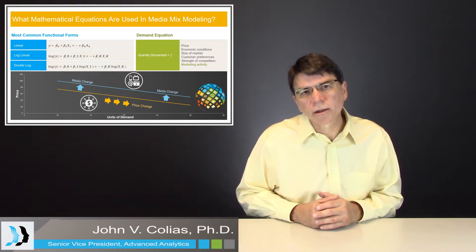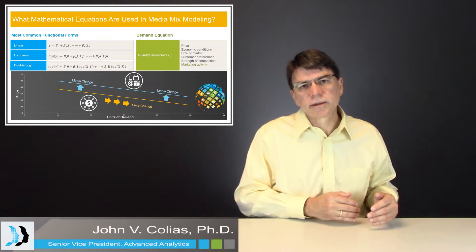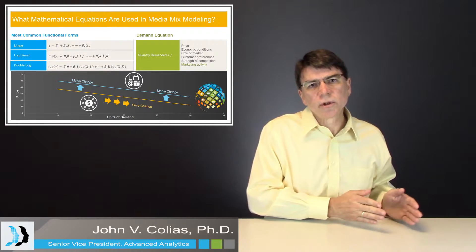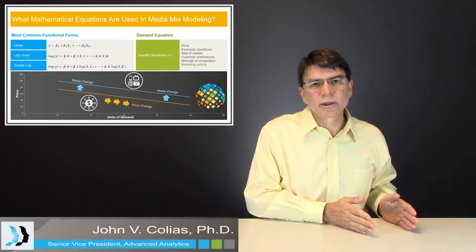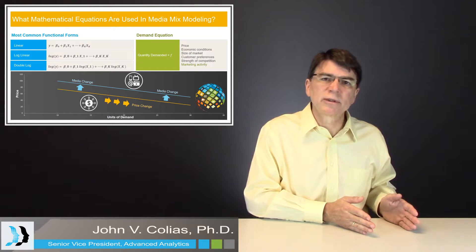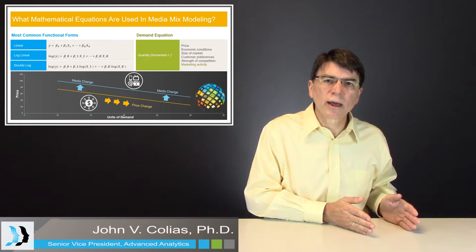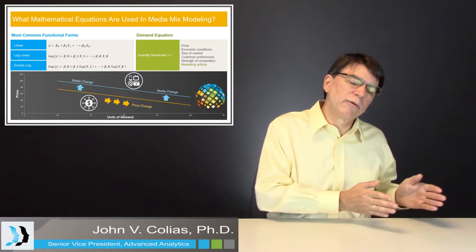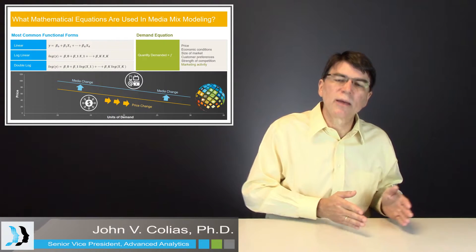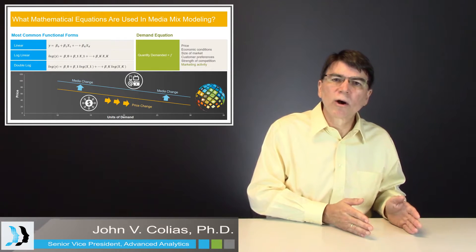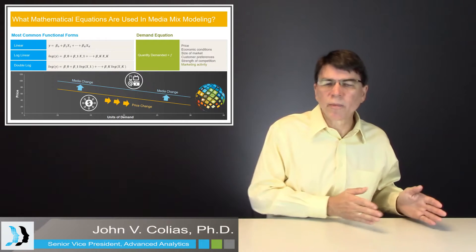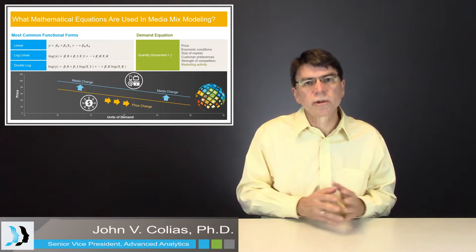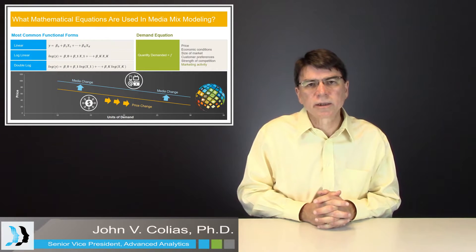On the other hand, with the log-linear equation, the assumption embedded within it is that a given unit change in GRPs would have the same percentage impact on unit sales regardless of where you are on the demand curve — whether you're at 100 GRPs or whether you're at 200 GRPs, the impact on a percentage basis is the same.